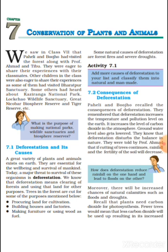The purposes of deforestation include: procuring land for cultivation (krishi ke liye bhoomi prapt karna), building houses and factories (gharon evam karkhano ka nirman), and making furniture or using wood as fuel. For example, tables, chairs, and beds are made from wood. Also, forests are cut for farming and for building factories. This is why forests are decreasing.